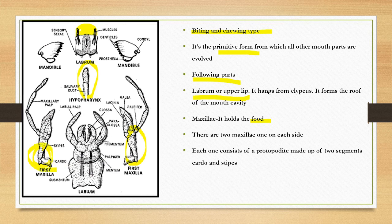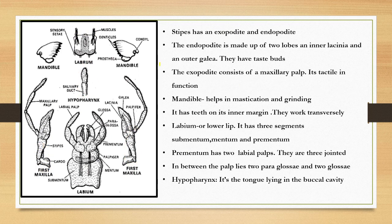Under the cardo there is the stipes. This is called the exopodite — and this is the endopodite. The endopodite is made up of two lobes: the lacinia. This one is called the lacinia.